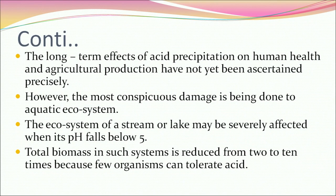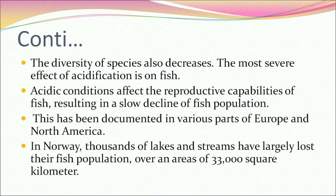The long-term effects of acid precipitation on human health and agricultural production have not yet been precisely ascertained. However, the most conspicuous damage is being done to aquatic ecosystems. The ecosystem of a stream or lake may be severely affected when its pH falls below 5 — total biomass is reduced 2 to 10 times because fewer organisms can tolerate acid, and species diversity decreases. Acidic conditions affect the reproductive capabilities of fish, resulting in a slow decline of fish populations. In Norway, thousands of lakes and streams have largely lost their fish population over an area of 33,000 square kilometers.